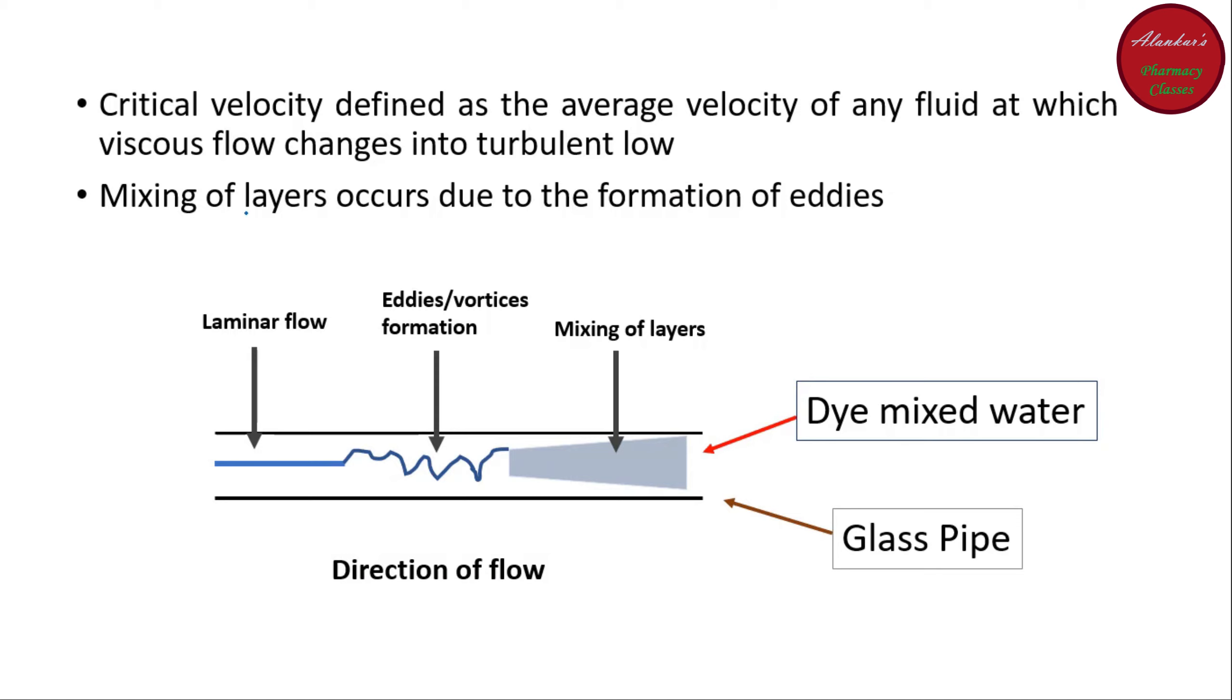There is another observation. And in this case, he defined a term which is known as critical velocity. And it is defined as the average velocity of any fluid at which the viscous flow changes into turbulent flow. And the mixing of layers occurs due to the formation of eddies. Here you can see initially when velocity of the liquid is less, there is a laminar flow. And when we increase the velocity, there is a formation of eddies. And finally, there is an intermixing of the layers and the whole water mixed with the dye solution.